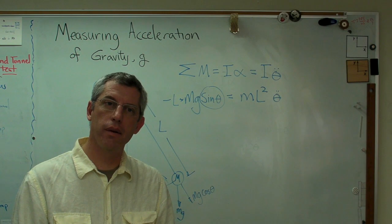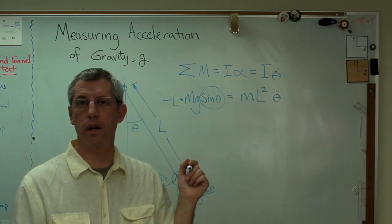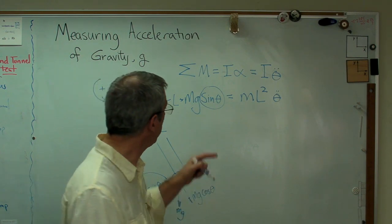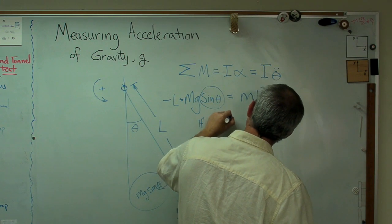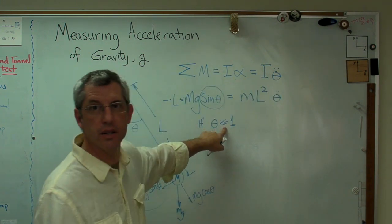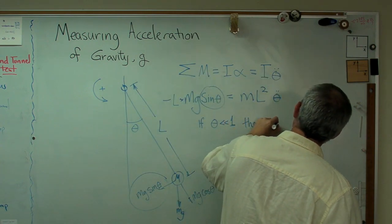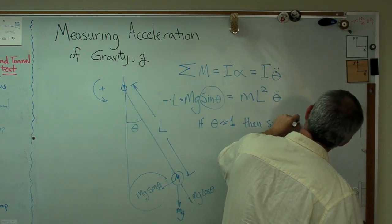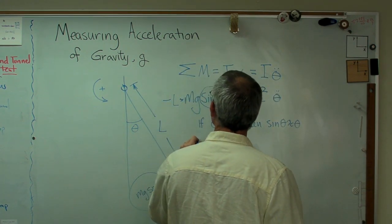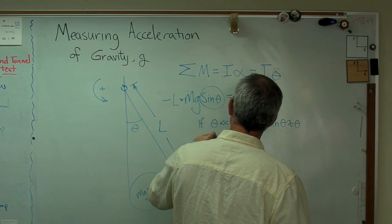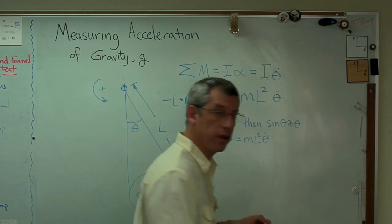The way we can get around that is to assume small angles. I did a small angle video a little while ago, so you can go back and check that if you like. But if the angle is small, if theta is much less than 1, then sine theta is approximately theta. So I'm going to throw that in here, and I'm going to say minus MGL theta equals ML squared theta double dot.